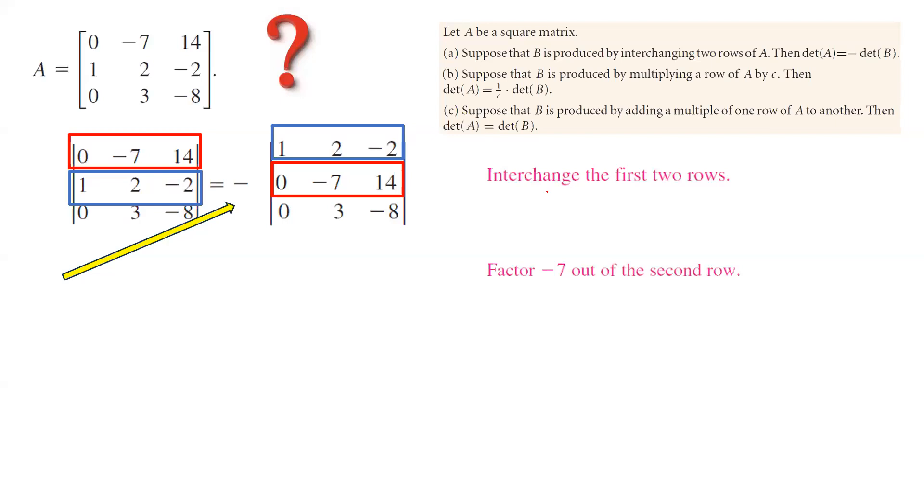Now what? Now we can factor out negative 7 out of the second row. Your second row becomes 0, 1, and negative 2. And then since you factor out negative 7, negative 7 times negative sign gives you positive 7. The first row is 1, 2, negative 2. The third row is 0, 3, negative 8.